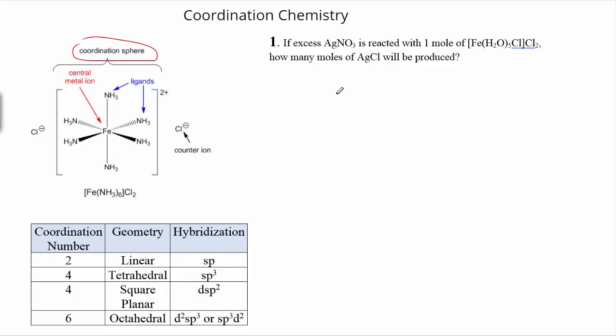The question on your handout reads: If excess silver nitrate is reacted with one mole of this coordination compound, how many moles of AgCl will be produced? So the reaction of interest here is Ag+ reacting with Cl- to form insoluble AgCl. The key is that these two chlorides that are just counter ions are free to react, but this guy here inside the coordination sphere is acting as a ligand. He's not free to undergo this kind of aqueous reaction. So if we've got excess silver nitrate with only one mole of this compound, this one mole contains two moles of chloride ions, so we should be able to produce two moles of AgCl.